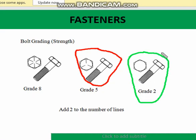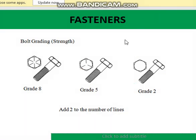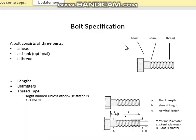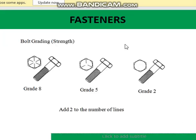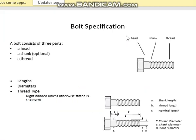If we don't have any lines on the bolt head, we just add 2 and we have a Grade 2 bolt. This is the grading system for fasteners and bolts.